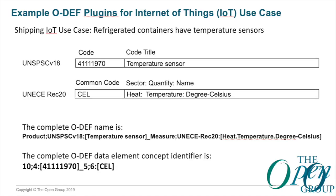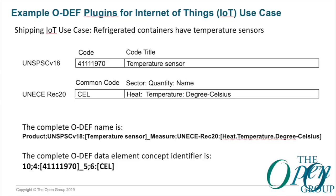Similarly, if a container ship has a temperature sensor — because they have a refrigerated container — you want to know what the temperature is and the unit of measure of that sensor. Applying the same principles with UNSPSC version 18, enter 'temperature' or 'sensor' and you get all the different kinds of sensors. The code for a temperature sensor is 41111970. You're monitoring temperature in Celsius. The complete ODEF name follows the standard's syntax rules, and its equivalent data element concept identifier is derived accordingly.